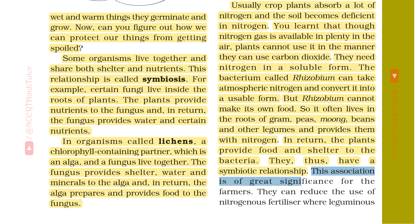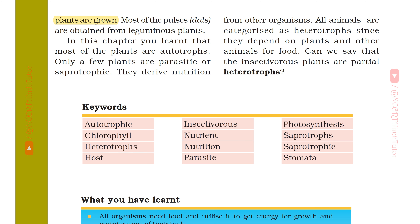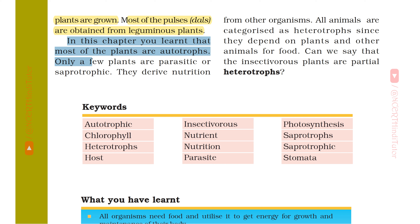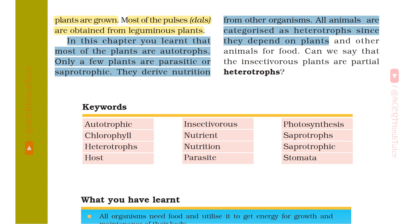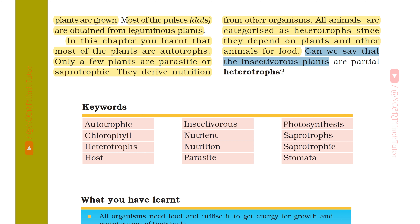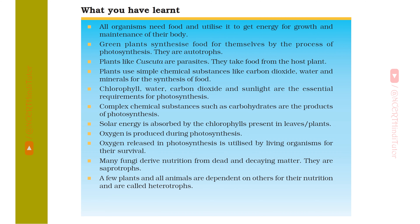This association is of great significance for farmers. They can reduce the use of nitrogenous fertilizer where leguminous plants are grown. Most of the pulses, i.e., dals, are obtained from leguminous plants. In this chapter, you learned that most of the plants are autotrophs. Only a few plants are parasitic or saprotrophic. They derive nutrition from other organisms. All animals are categorized as heterotrophs since they depend on plants and other animals for food. Can we say that insectivorous plants are partial heterotrophs? Since we have completed the chapter, now let's read what you have learned.